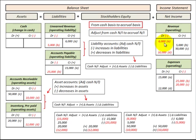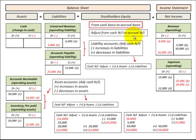For an inventory or prepaid expense increase, we debited that amount, requiring a corresponding credit to expenses, which reduces expenses and increases cash net income. Any increase in revenues also increases cash net income to make the adjustment to an accrual basis. We used this T-account approach to simplify how we make those adjustments.